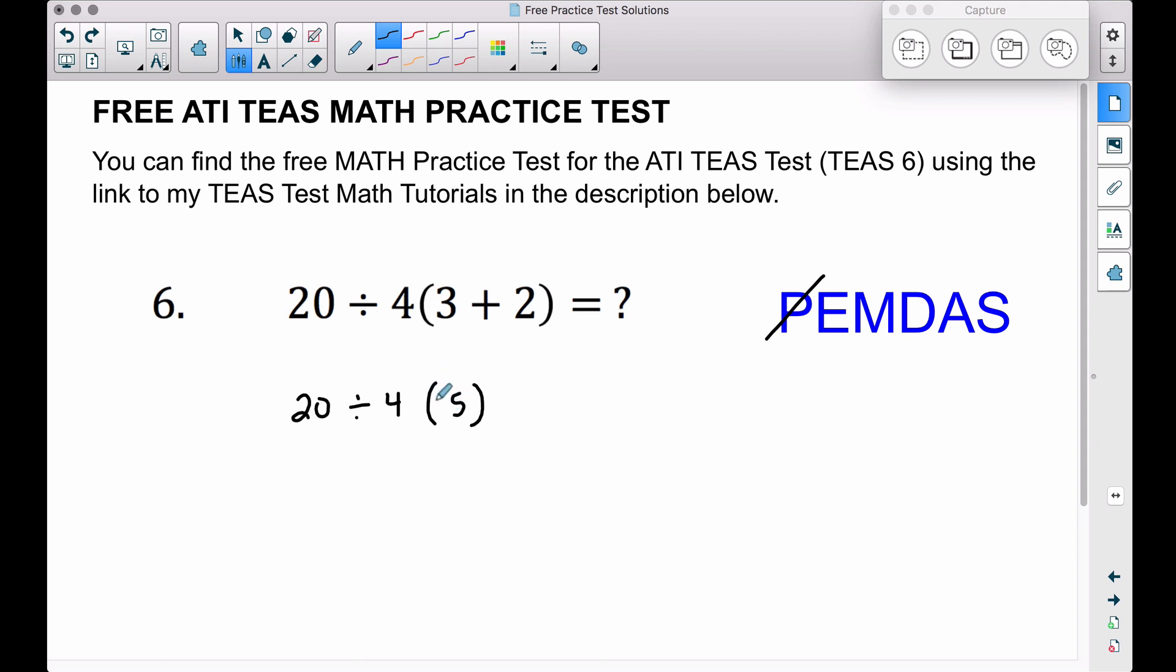We have no exponents, and then your multiplication and division order of operations, you do not always multiply before you divide. You multiply and divide based on whichever one comes first, and if you did not do that correctly in this next step here, you will get the incorrect answer.